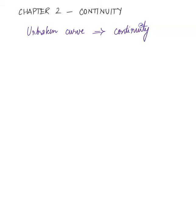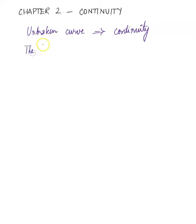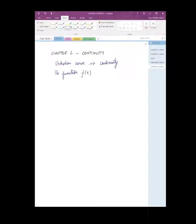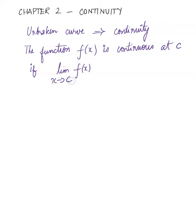Now if I were to define this in math, I would say the function f(x) is continuous at c using the limit notation. The function f(x) is continuous at c — where c is some point — if the limit of f(x) as x approaches c, which is usually equal to L, should be equal to the function value f(c).